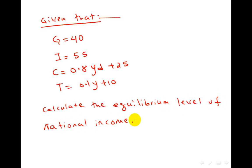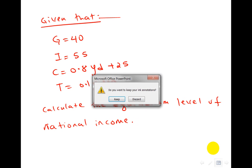Given that G equals 40, I equals 55, C equals 0.8YD plus 25, T equals 0.1Y plus 10. So you're supposed to calculate the equilibrium level of national income. Please try this question and if you have any question or any problem here, ask me.